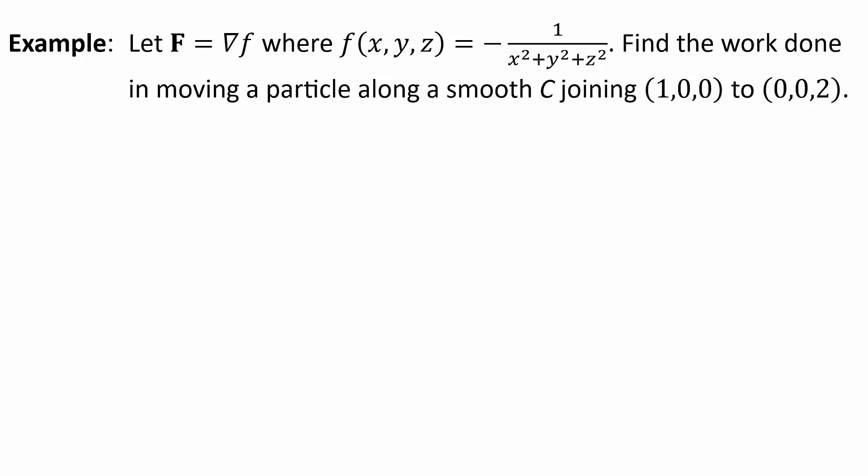Find the work done in moving a particle along a smooth C joining the point 1,0,0 to 0,0,2. Notice I didn't specify what C is. It's not parametrized, it's not specified in any way, other than the fact that it begins at 1,0,0 and ends at 0,0,2.